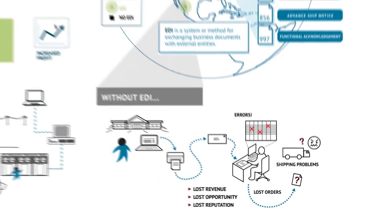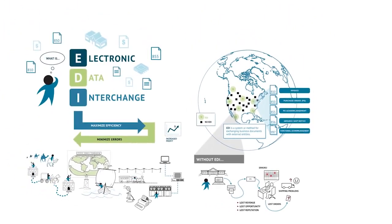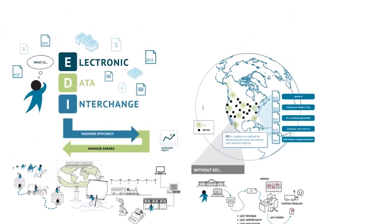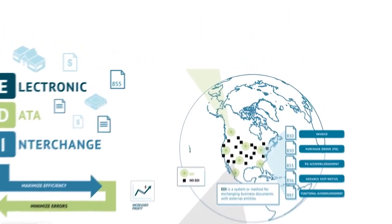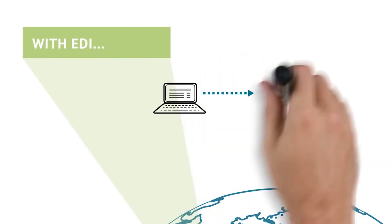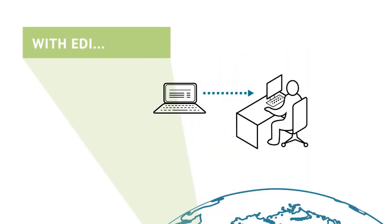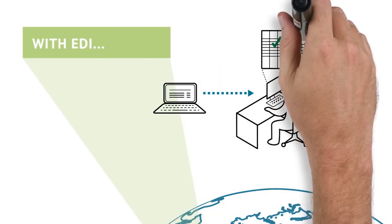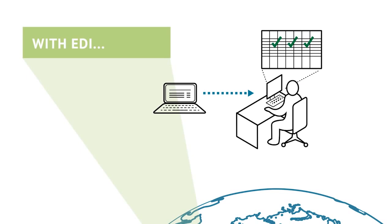An integrated, end-to-end EDI solution automatically populates orders into your accounting software or ERP system while checking for errors when sending and receiving transactions. It should also verify that all transactions were sent and received successfully, providing critical process controls for vendors and suppliers.